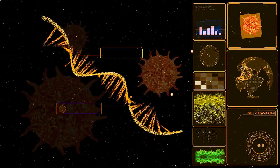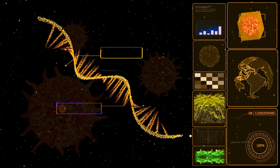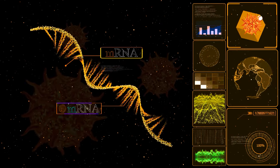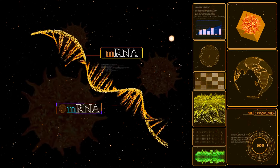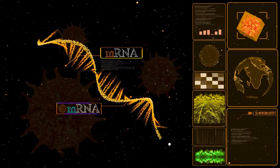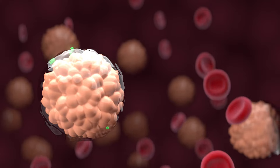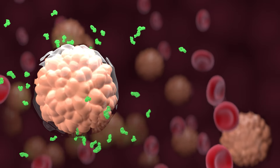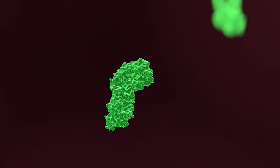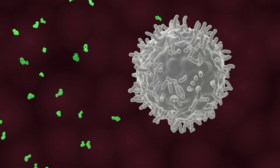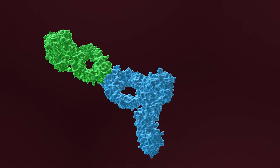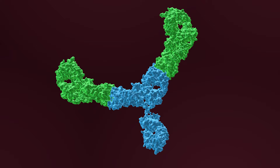When developing a new vaccine, biotechnologists must determine the mRNA sequence that would cause ordinary human cells to produce virus-specific surface proteins. As soon as our cells produce these specific proteins, or surface antigens, our immune system recognizes them as foreign and thus produces antibodies to neutralize them.